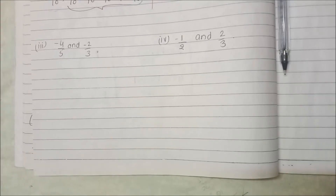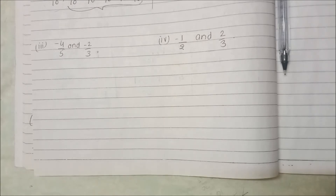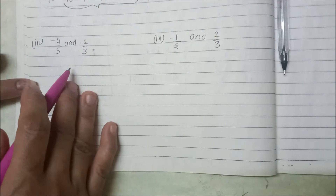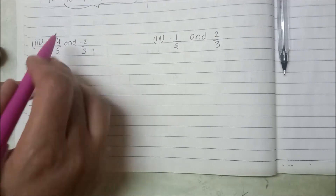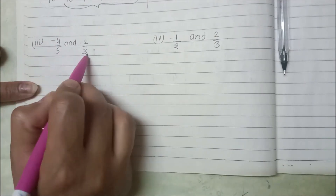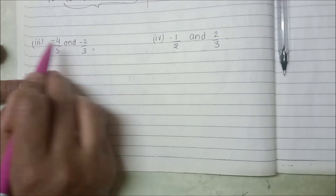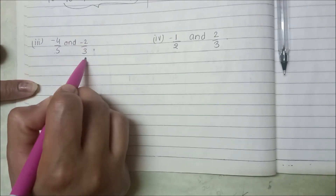Hello friends, welcome back to your channel Beginners Point. We will see Class 7 Maths Exercise 9.1, Question 1, third subpart. We have to find 5 rational numbers between two fractions: minus 4 upon 5 and minus 2 upon 3.